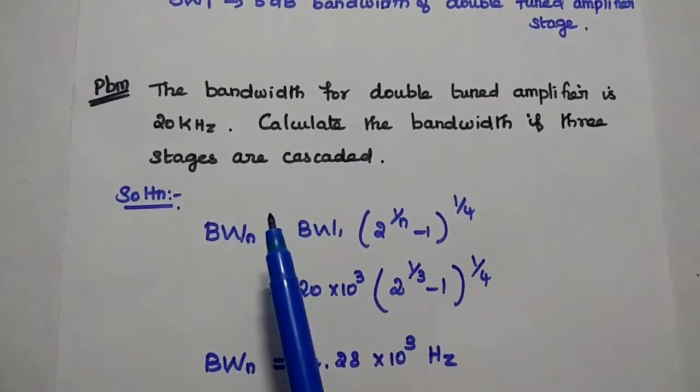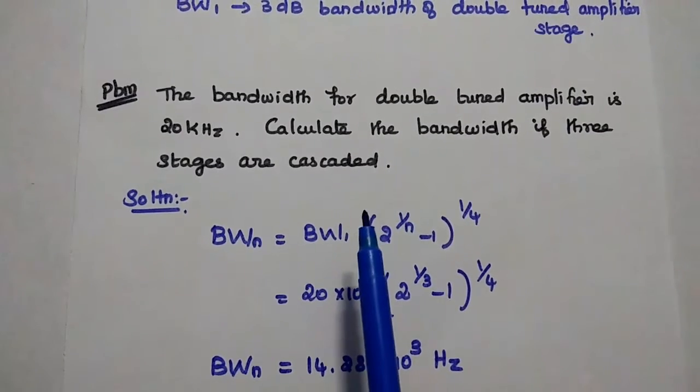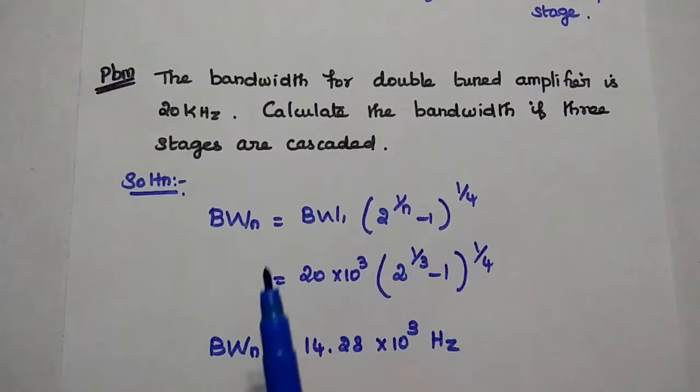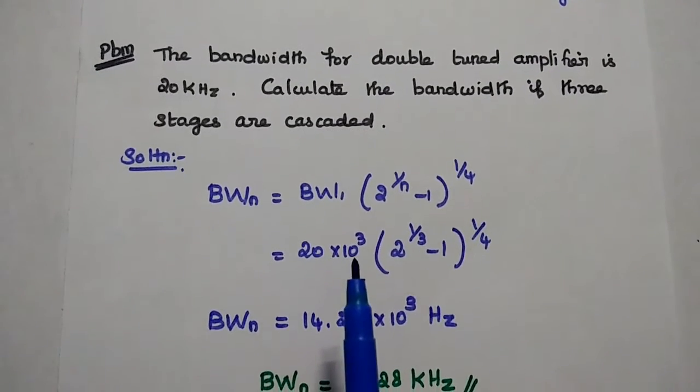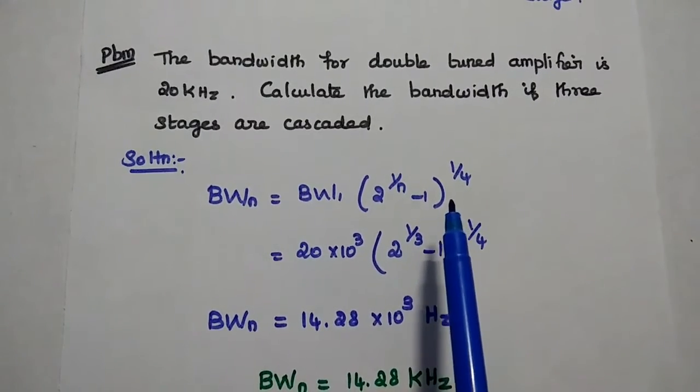So in this problem they have given the bandwidth for double tuned amplifier. We are going to find out the overall bandwidth for 3 stages. So here the formula is BW1 into 2 power 1 by N minus 1, the whole power 1 by 4.